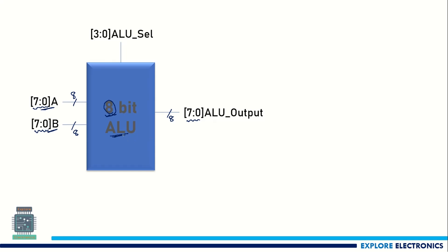For this ALU we need to choose the opcode, which I have named 'ALU select.' The opcode size depends on the number of different operations the ALU will perform. I have taken it as [3:0], meaning the opcode is 4 bits, ranging from 0000 up to 1111. That gives 16 different operations this ALU can perform.